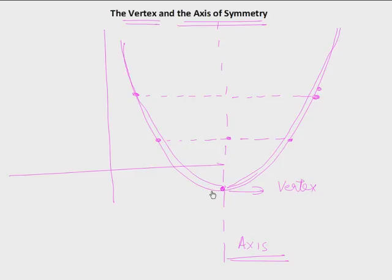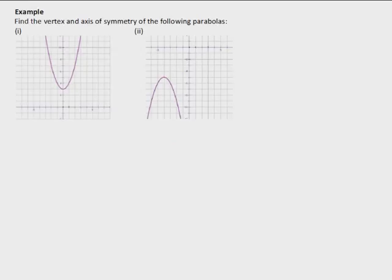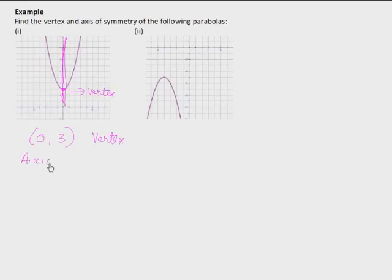We'll soon see how the vertex and axis of symmetry can be obtained from the equation of the graph without having to draw it, making the complete connection between the algebra and the graph of the parabola. For example: this vertex is clearly at (0, 3), and the axis of symmetry is the y-axis — the parabola is symmetric about the y-axis.